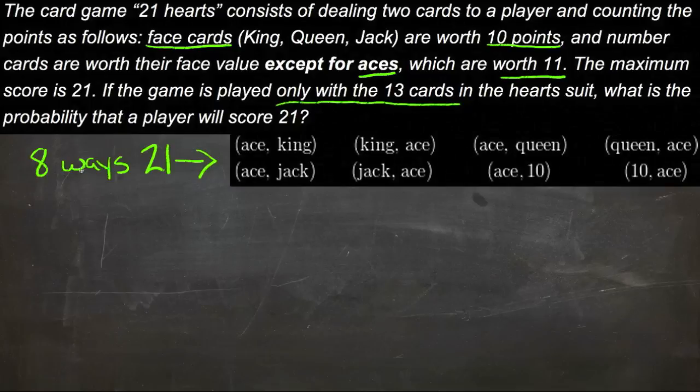Then we can figure out what portion of that total probability 8 ways is. So we need to figure out how many possibilities there are if we have 13 cards, and out of that 13 we pick 2.